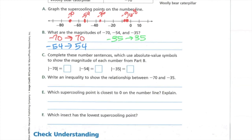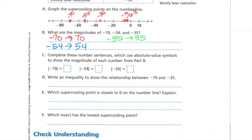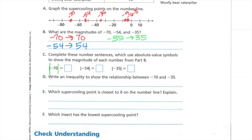Complete these number sentences, which use absolute value symbols to show the magnitude of each number from part B. Again, you see these lines here. That means absolute value. How many spaces from zero? So what's the absolute value of negative 70? 70. 70 spaces from zero. What's the absolute value of negative 54? 54. Good. The absolute value of 35 is 35.